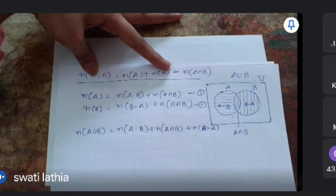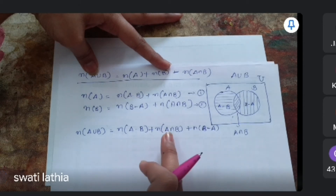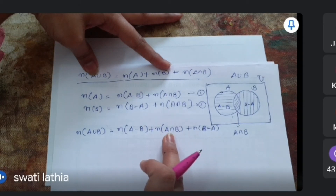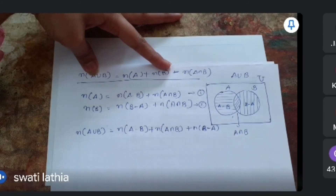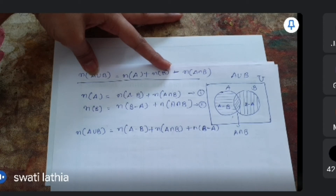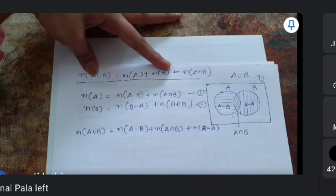આ proof લેવા, n(A∩B) add કરીએ અને subtract કરીએ — equation ની value change ન થાય, meaning change ન થાય. So by adding and subtracting n(A∩B), બંને side add અને subtract કર્યું. n(A∪B) = n(A-B) + n(A∩B) ... અને ફરી subtract.